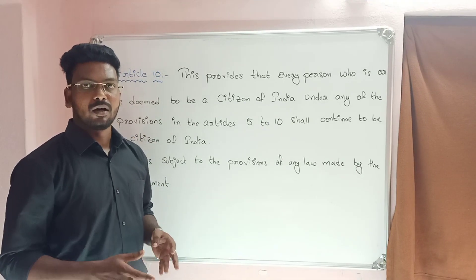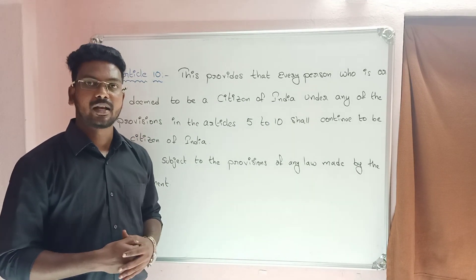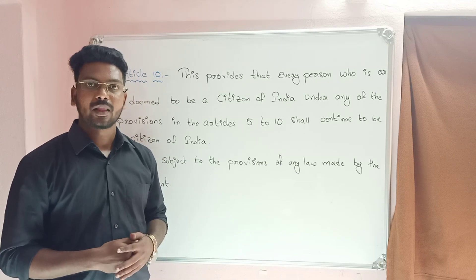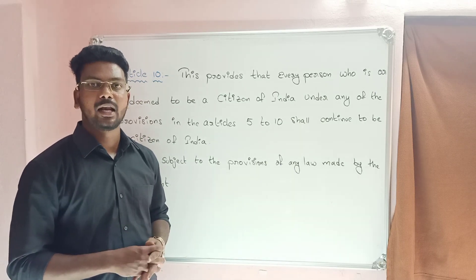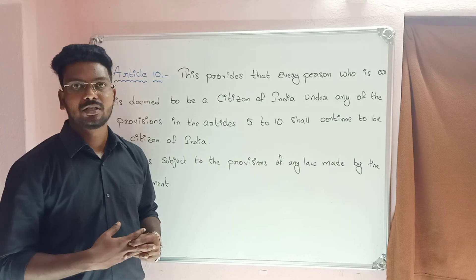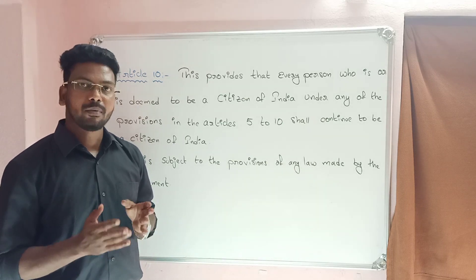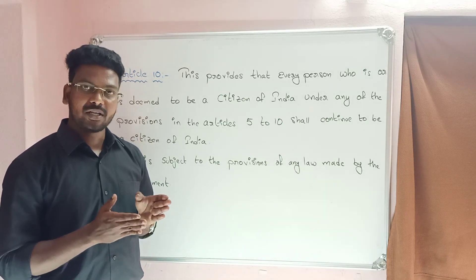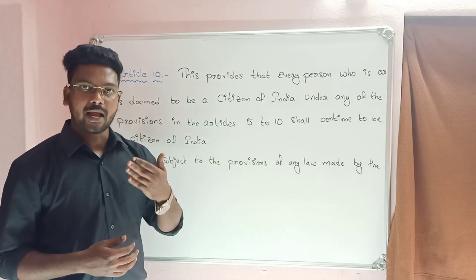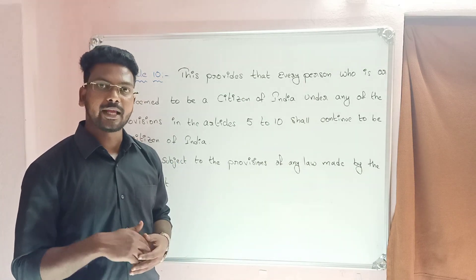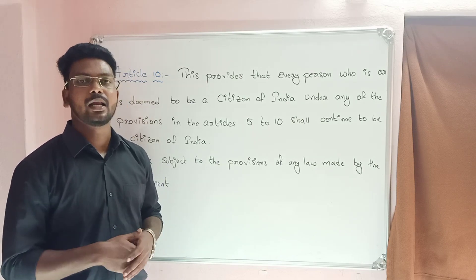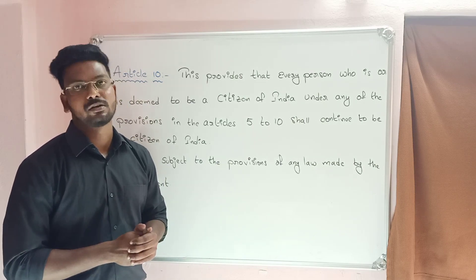In this video, Articles 5 to 10 have been briefly explained. In the next video, Article 11 and the Citizenship Act of 1955 will be discussed, including the acquisition of citizenship by 5 methods and termination by 3 methods. Thank you.